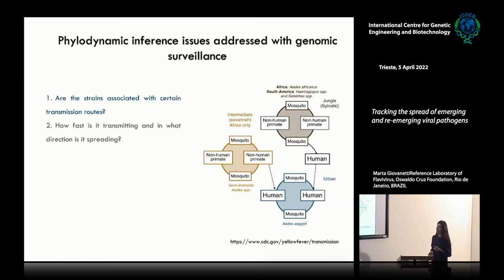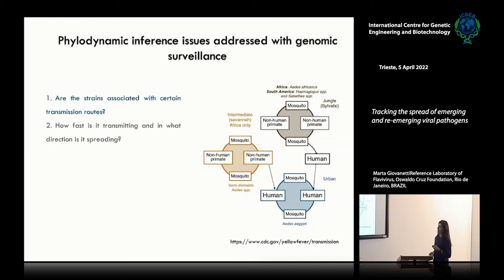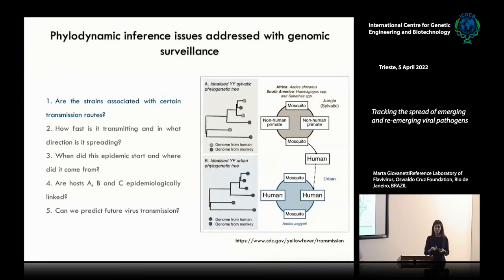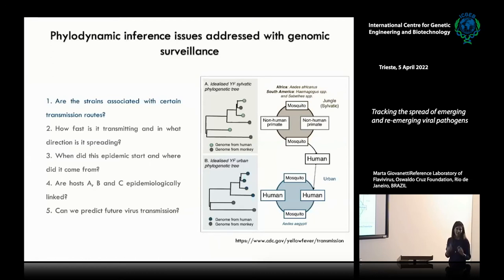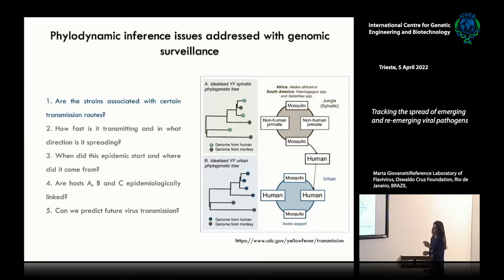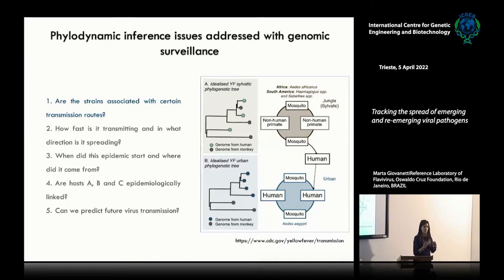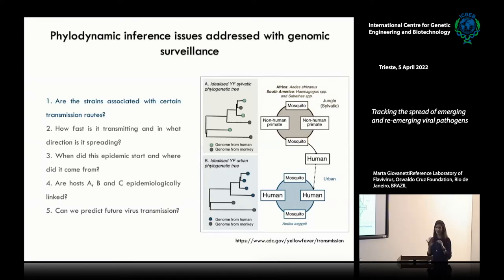In the urban cycle, we have Aedes aegypti mosquitoes that play an important role and are able to infect humans. By using phylogenetic inference, we can be able to detect if a specific outbreak can be related to a sylvatic as well as urban cycle. How will we be able to detect this? By taking a look at the viral phylogeny. In the case of the sylvatic cycle, we will see that strains from human and non-human primates will be interspersed among them, and in the urban cycle, we will see a different spatial distribution.